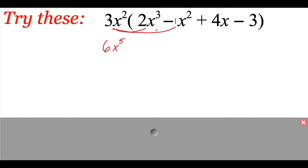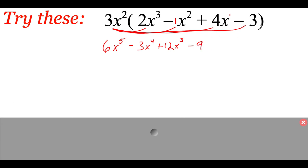Now there's really a negative 1 in front of here, so 3 times negative 1 is negative 3. x squared times x squared — if I add those exponents together, I get x to the 4th. Then I take my 3x squared times this plus 4x. 3 times 4 gives me 12. x squared times x to the first power gives me x cubed. And lastly, I need to take my 3x squared and multiply it to the negative 3. So 3 times negative 3 is negative 9, and I don't have any extra x's to add to this x squared, so it just stays as x squared. So we get 6x to the 5th minus 3x to the 4th plus 12x cubed minus 9x squared.